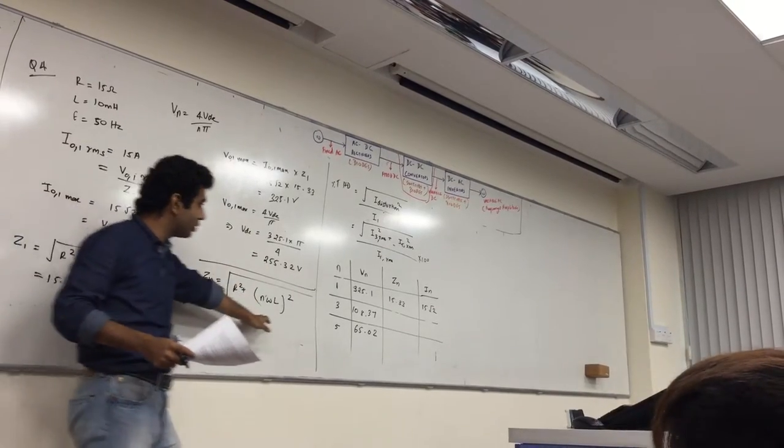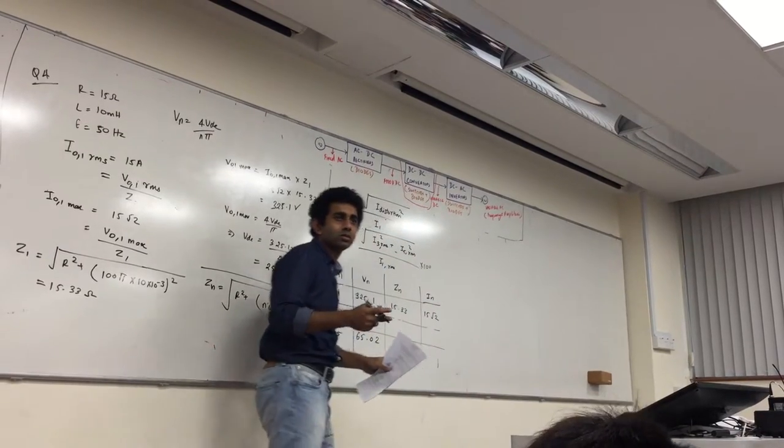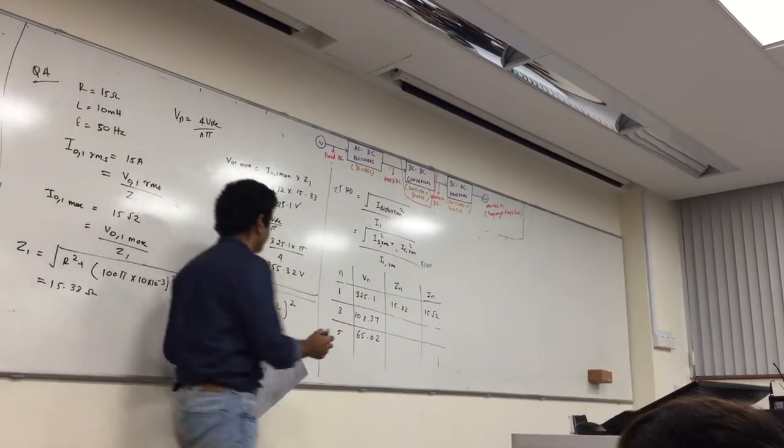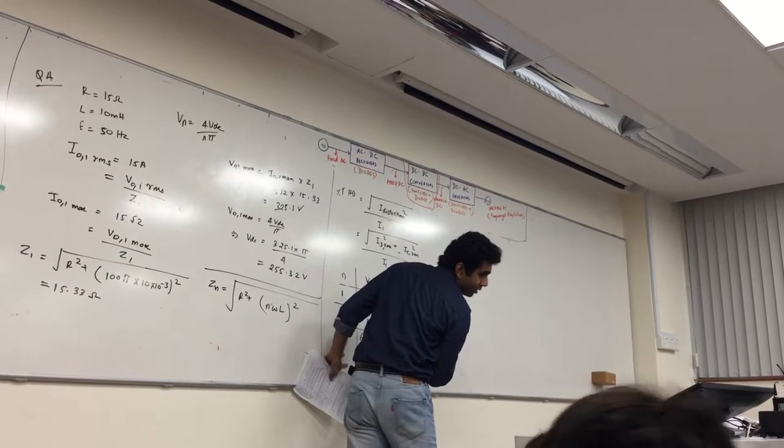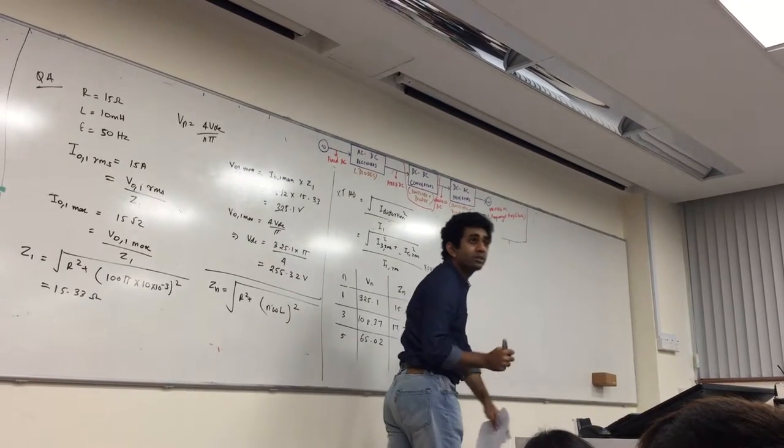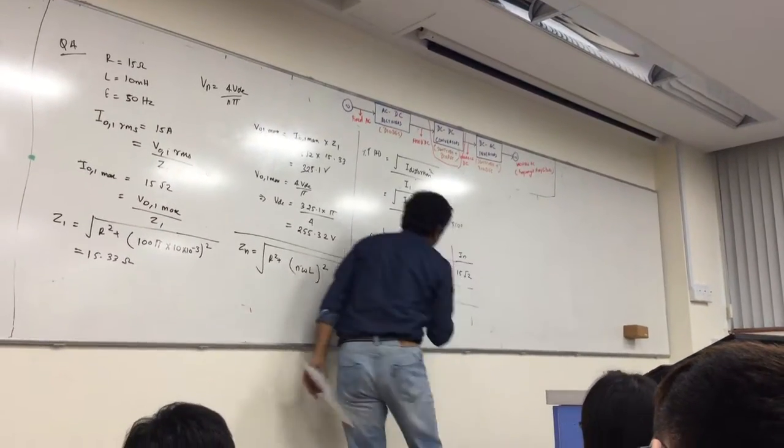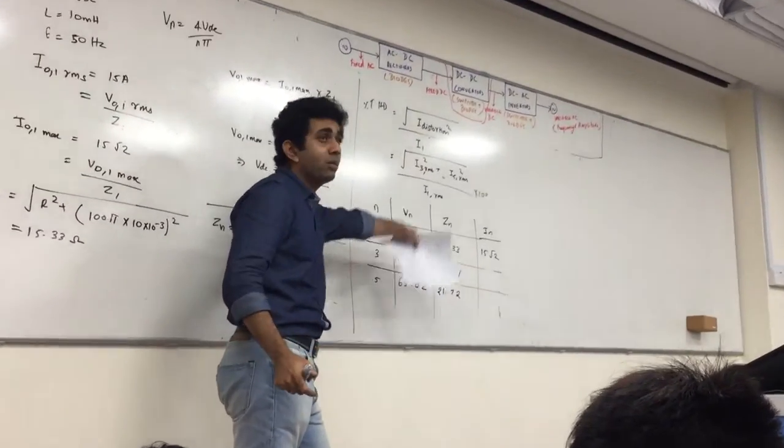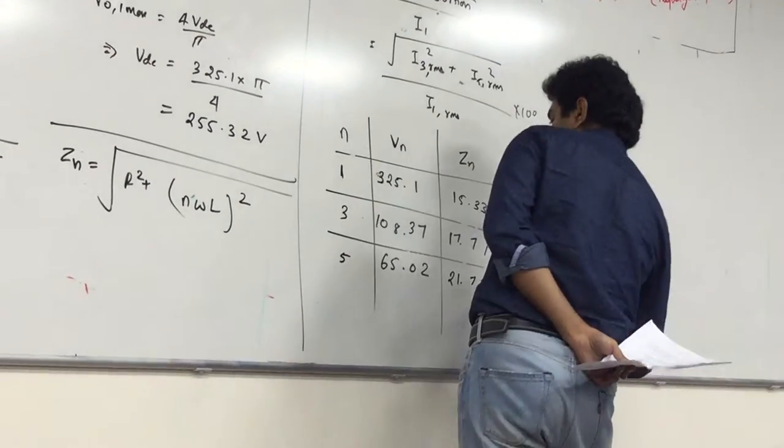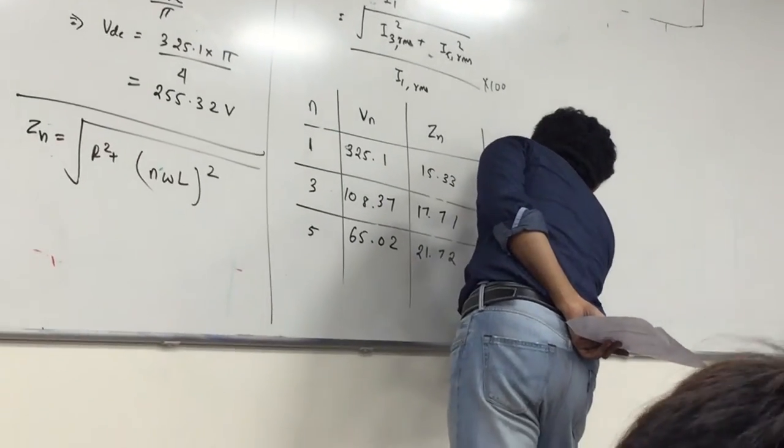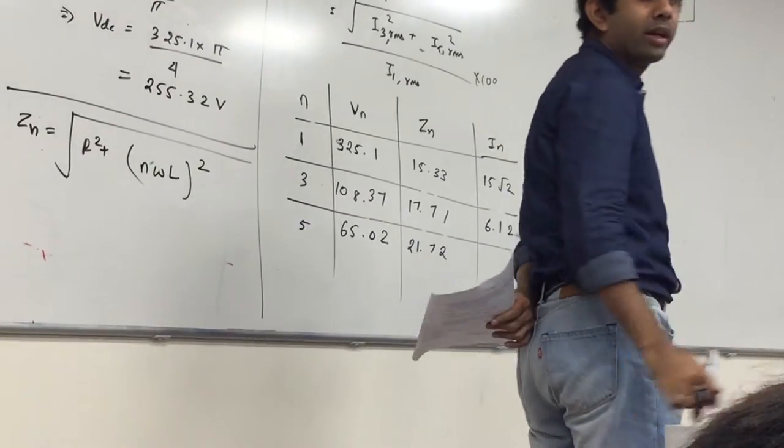You find it out this thing here, you're going to get Z3 is 17.71, and Z5 is 21.7. So I should be able to find out my currents also. So my I3 is 6.12, and I5 is 2.993.